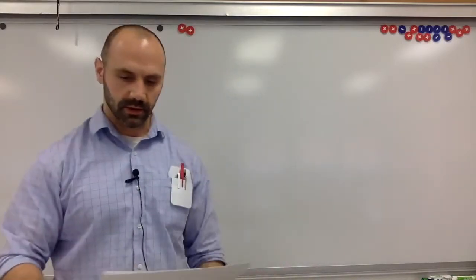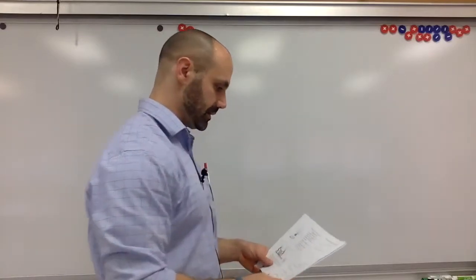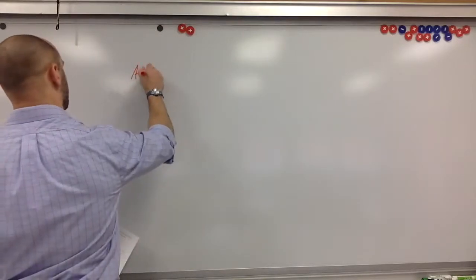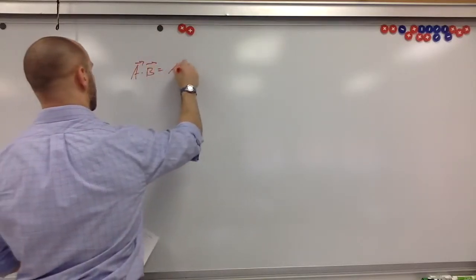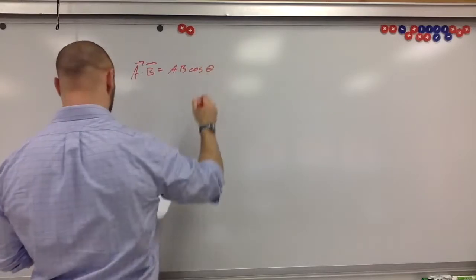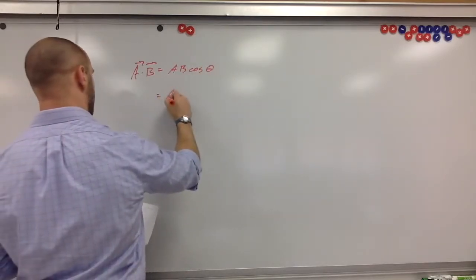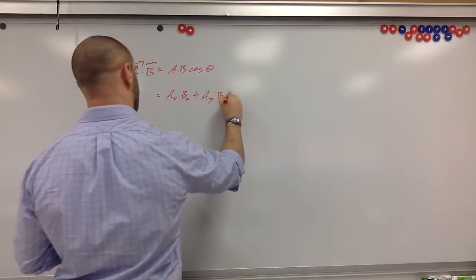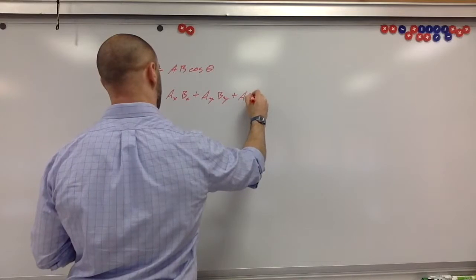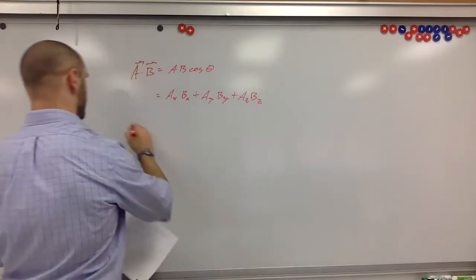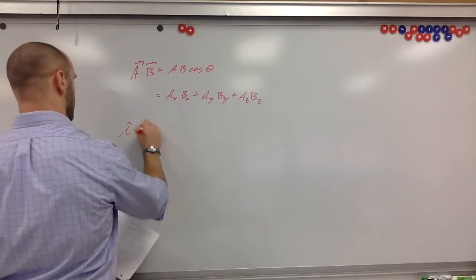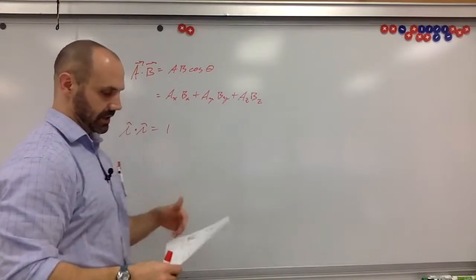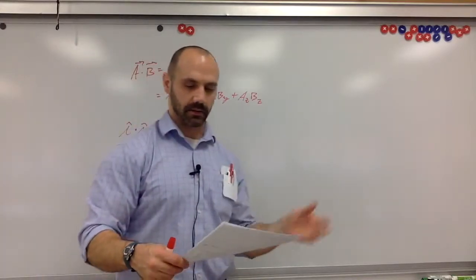Remember the dot product — the scalar product: A · B = AB cosθ. It's also equal to AxBx + AyBy + AzBz. Note that i·i = 1, j·j = 1, k·k = 1, and the cross terms i·j, j·k, k·i are all zero.